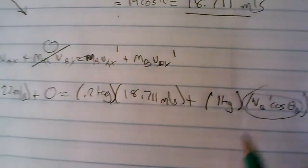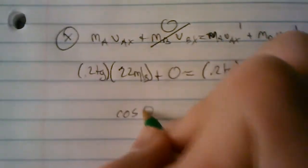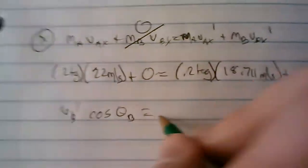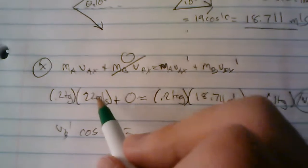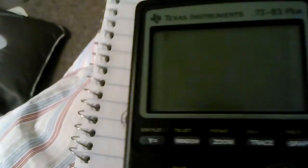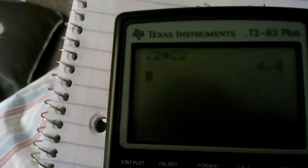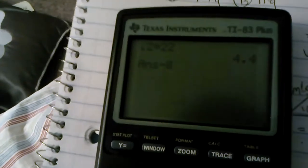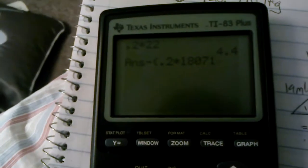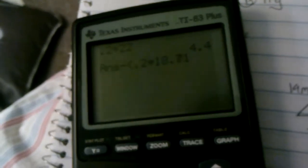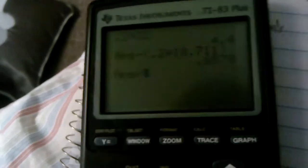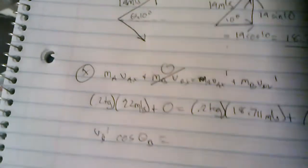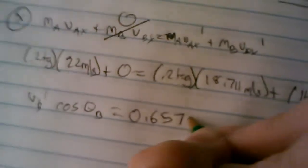So we're going to solve this for cosine of theta B. So we're going to multiply these, subtract that over, and then divide by 1, which would obviously just give us the same value. So, going back to the calculator, we have 0.2 times 22 equals 4.4 minus 0.2 times 18.711, and then divide it by 1. So we're given that the answer is 0.6578 meters per second.